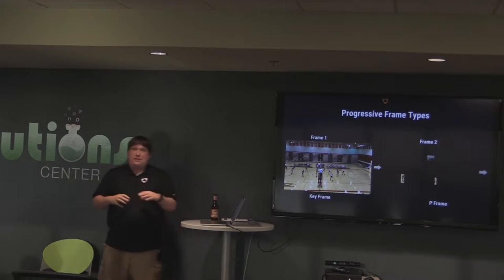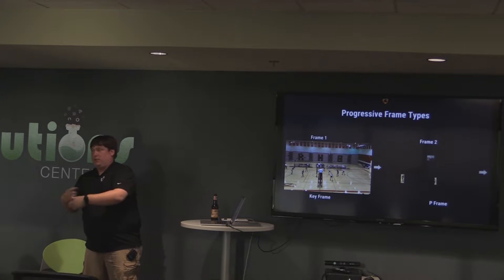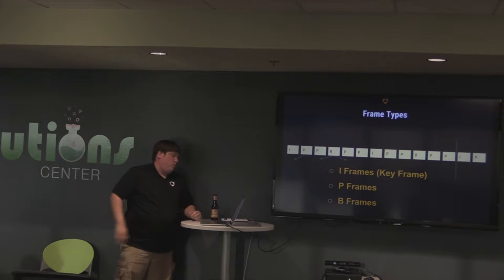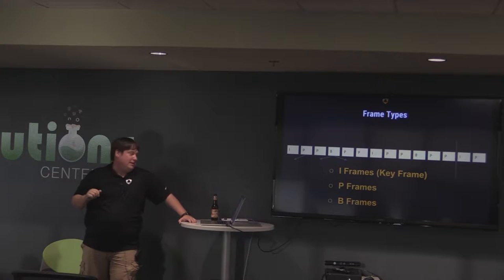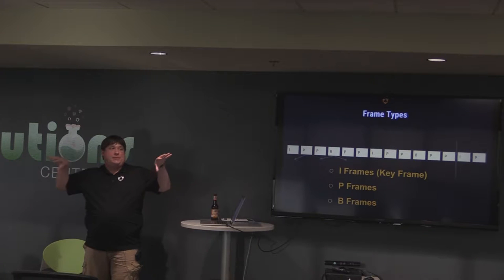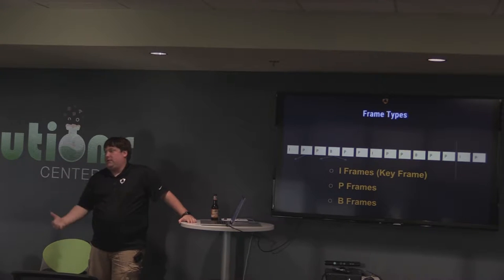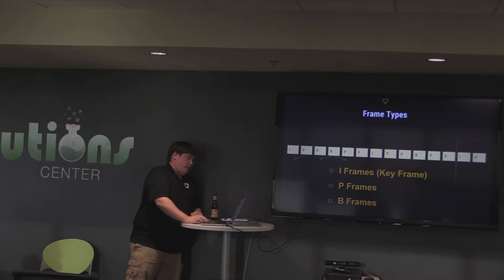The first frame — the frame that has the full image — is called a key frame. The subsequent frames that only encode changes from previous frames are called P frames, which stands for predicted. There's also B frames. Key frames are also called I frames. P frames reference frames in front of them. B frames reference frames on both sides of them in the stream. Different codecs use different frame types — some codecs won't even use B frames, just I and P frames. H.264, which we use, does use B frames.